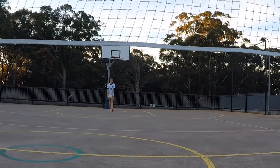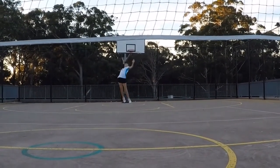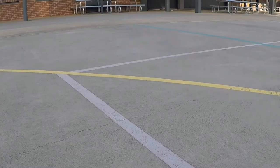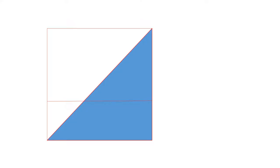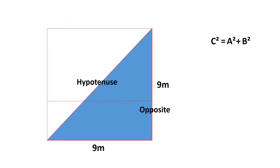If you want to hit the ball cross court to the opposite corner, how far will the ball travel before it hits the ground? The court is 9 metres long and 9 metres wide. We can work out how far the ball will travel by using the Pythagorean theorem: C squared equals A squared plus B squared. The distance the ball will travel is the hypotenuse, the length of the court is the opposite, and the width of the court is the adjacent.